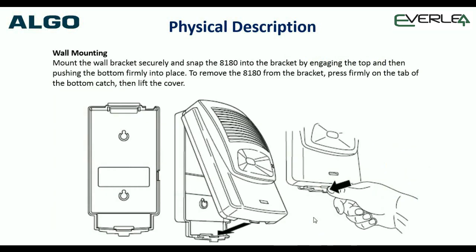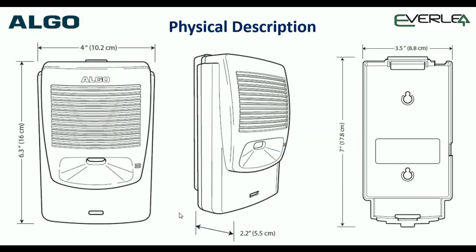When you're mounting it, it comes with its own bracket. The bracket just screws to the wall with two screws, then your network cable comes in the back - you put it in the top and drop it down and it clicks and locks very nicely into the bracket. The physical dimensions are not a huge footprint at all - 16 centimetres high by 10 centimetres wide and 5.5 centimetres at the widest point.